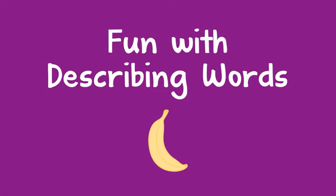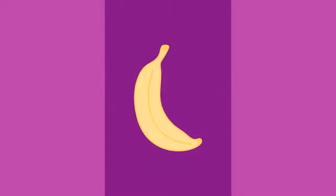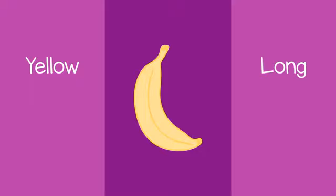To help your child develop their vocabulary, you can take turns describing something. For example, you could describe a banana. You might say, 'This banana is yellow.' Your child might say, 'The banana is long.'